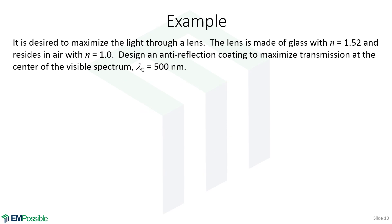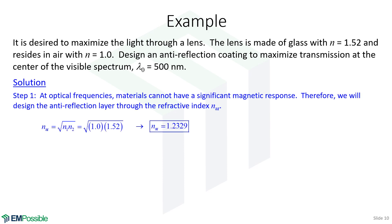Let's do an example. Let's say we want to maximize light through a lens. The lens is made of fused silica. It has a refractive index of 1.52. And of course, outside of that is air. So let's design an anti-reflection coating that maximizes transmission around 500 nanometers. And that's about the center of the visible spectrum. Well, the first thing we'll do is calculate the refractive index of the anti-reflection region. And so it's the geometric mean between air and fused silica. So we get a refractive index of 1.2329.